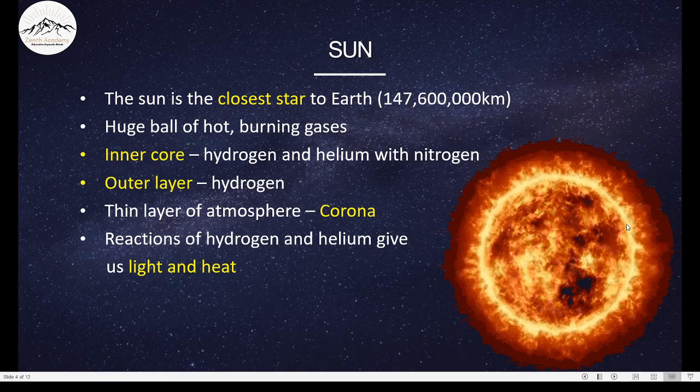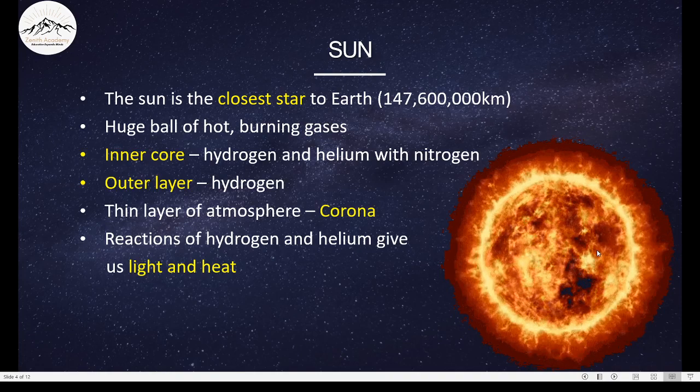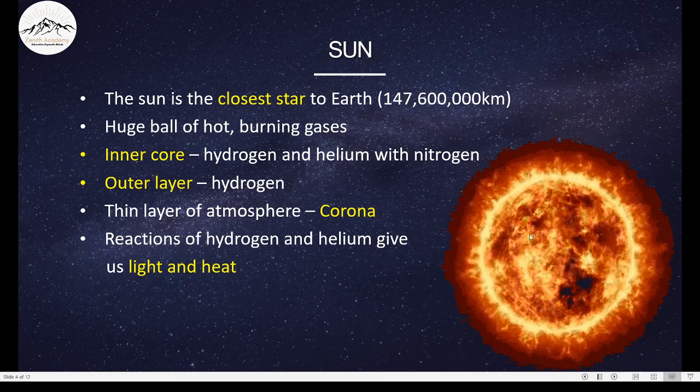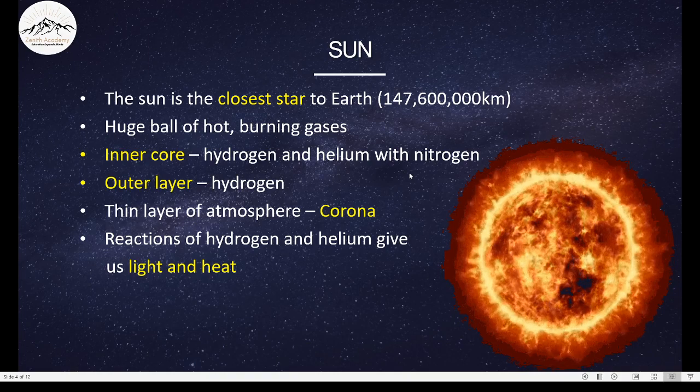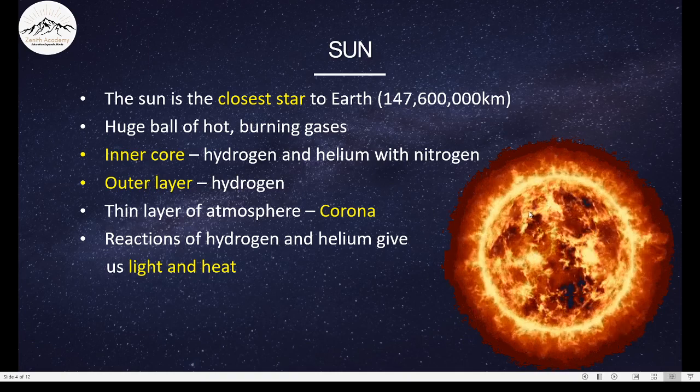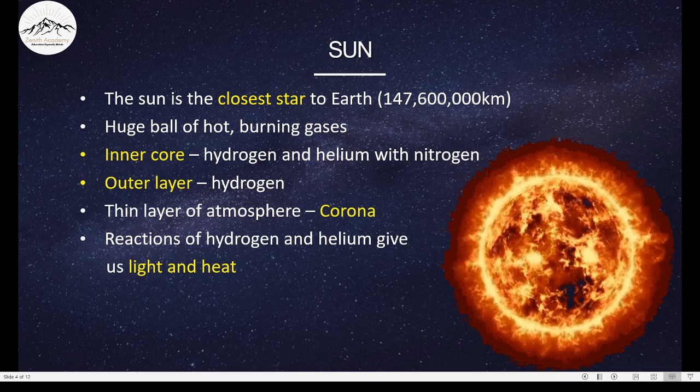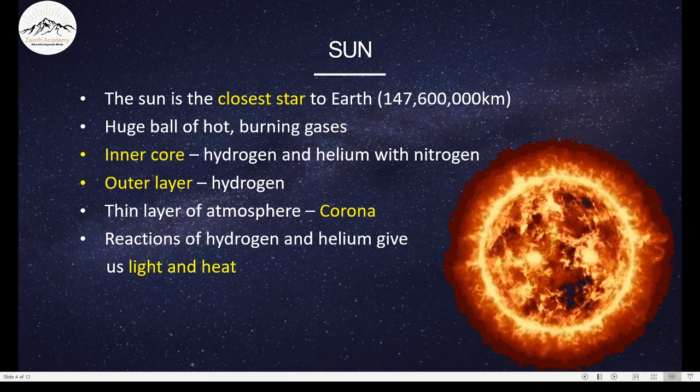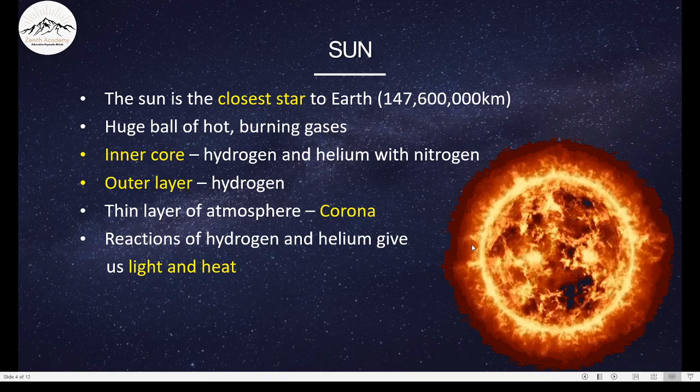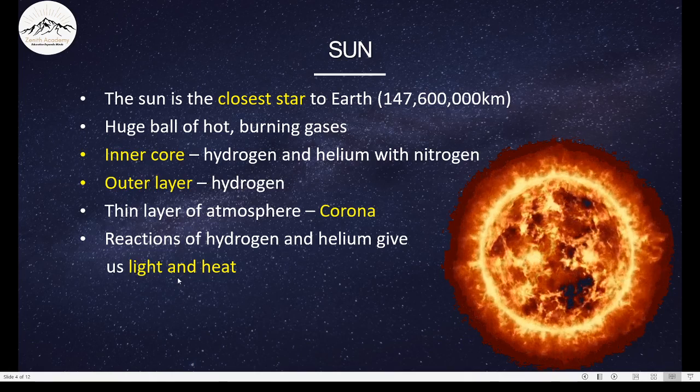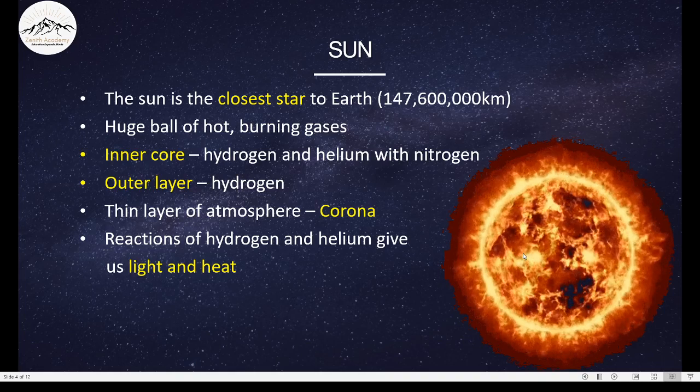As we can see, it looks like a burning ball. So the Sun is a huge ball of hot burning gases. And which gases are these? The inside part of the Sun has hydrogen and helium with traces of nitrogen in it. And the outer layer has hydrogen in it. The thin layer around the Sun is known as the corona. Not the disease. It's just a thin layer of atmosphere. The actions of hydrogen and helium give us light and heat. Sun is very important for us. And this light and heat is one of the reasons that we have life on our planet.